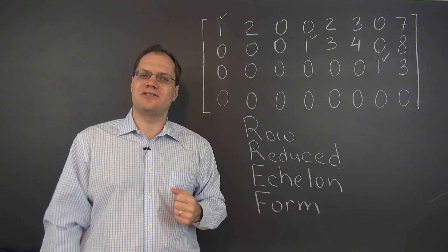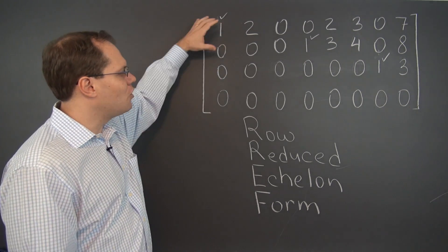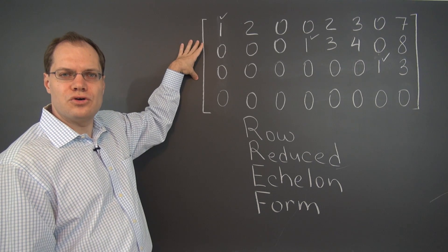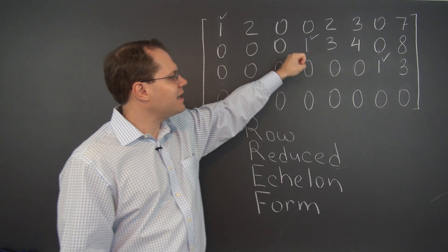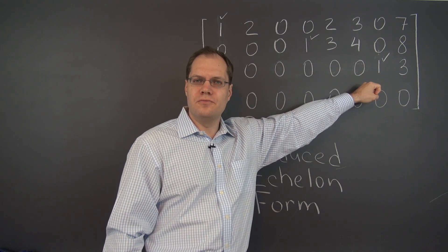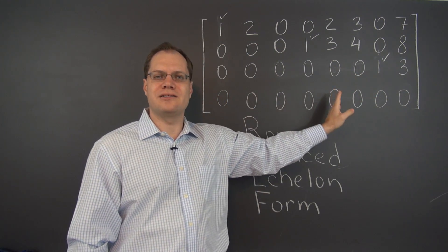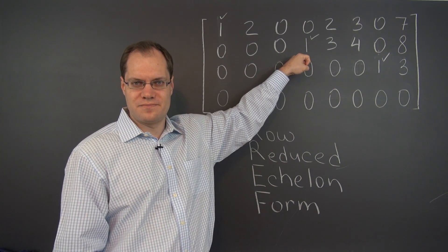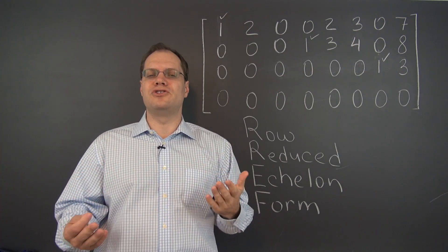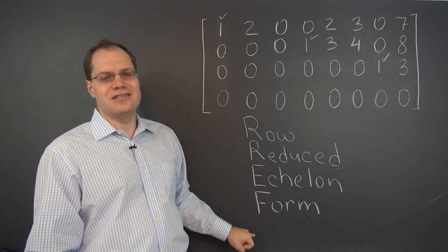According to the definition of row reduced echelon form, all the non-zero rows come first, then the zero rows, and the first entry of every row must appear to the right of the first non-zero entry in the previous row. Just stating those two things defines the row echelon form.